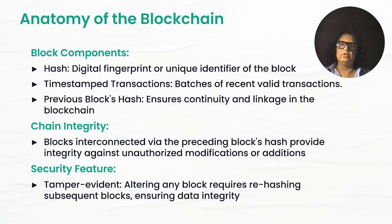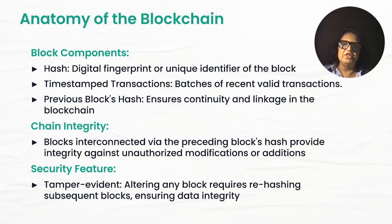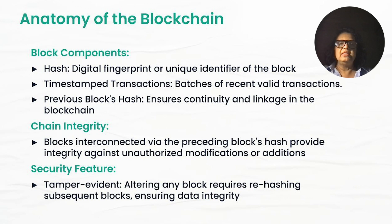What does a blockchain look like? Exactly like it says — it's a bunch of blocks connected by a chain. Each block has a unique identifier called a hash, which is the digital footprint of that block. But the block also contains the hash of the previous block. Because of that, the data is tamper-proof, and all the transactions are timestamped.